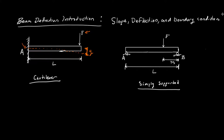We're also going to be looking at simply supported beams. If we have a load applied somewhere between the two supports, the beam will deflect. At each support — at A and B — it's not going to be deflecting at all, because we have supports holding it. The beam will deflect with some maximum deflection point, and that's going to be where the slope of this line is equal to zero.